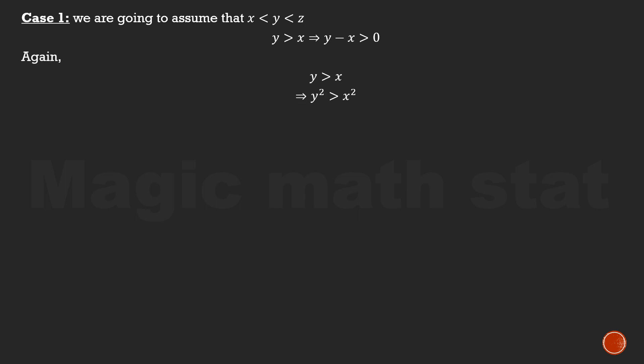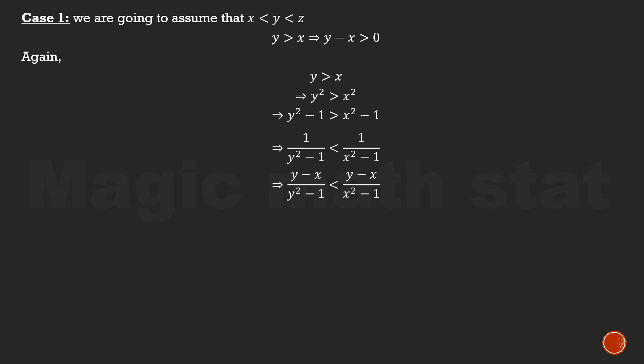Case 1: assume x < y < z. You can choose any other strict ordering and get the same result. From y > x, we get y-x > 0. Also, y² > x² so y²-1 > x²-1, and taking reciprocals gives 1/(y²-1) < 1/(x²-1). Multiplying both sides by the positive term (y-x) gives (y-x)/(y²-1) < (y-x)/(x²-1). Taking everything to the left: (y-x)/(y²-1) minus (y-x)/(x²-1) < 0. Call this Inequality 1.